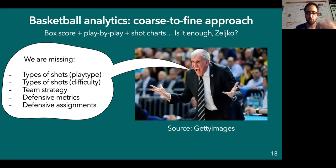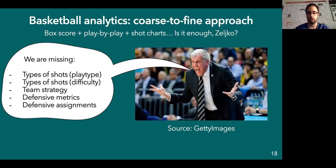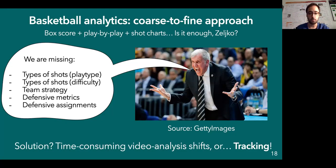If we present a report based on box score, play-by-play, and shot charts to a coach like Zelko Vladovic — one of the best European coaches of all time — we are missing types of shots, like whether a player scores off the dribble, or whether a player can make contested shots, team strategy, the opponent's playbook, defensive metrics, and defensive assignments. There's pretty much a lot to complement somehow. We could do it with time-consuming video analysis shifts, or we could use tracking — and tracking is where computer vision falls in this context.